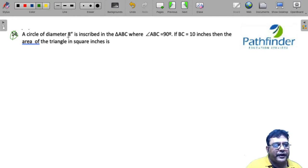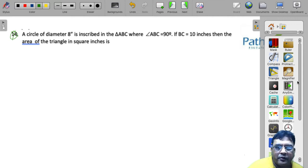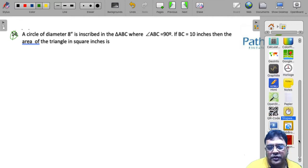A circle of diameter 8 inches is inscribed in triangle ABC, where angle ABC is 90 degrees. So what we can do is, we can pull out a circle from here. Let's do that.